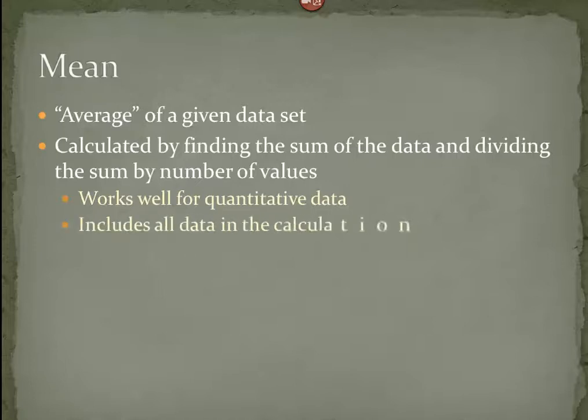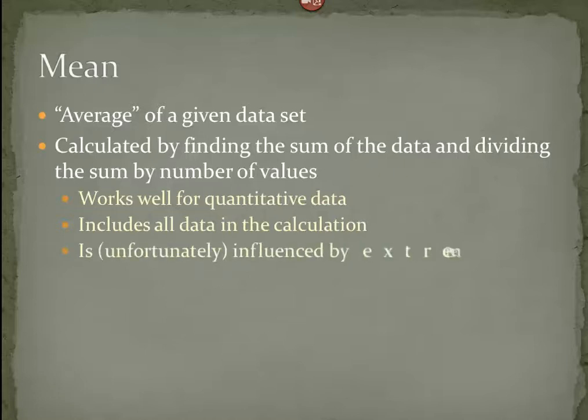One of the upsides of the mean is it includes all the data in the calculation — each number is part of calculating the final outcome. Unfortunately, this is one of the downsides as well. If our data contains any extremes or outliers, then the mean will be highly affected by that.